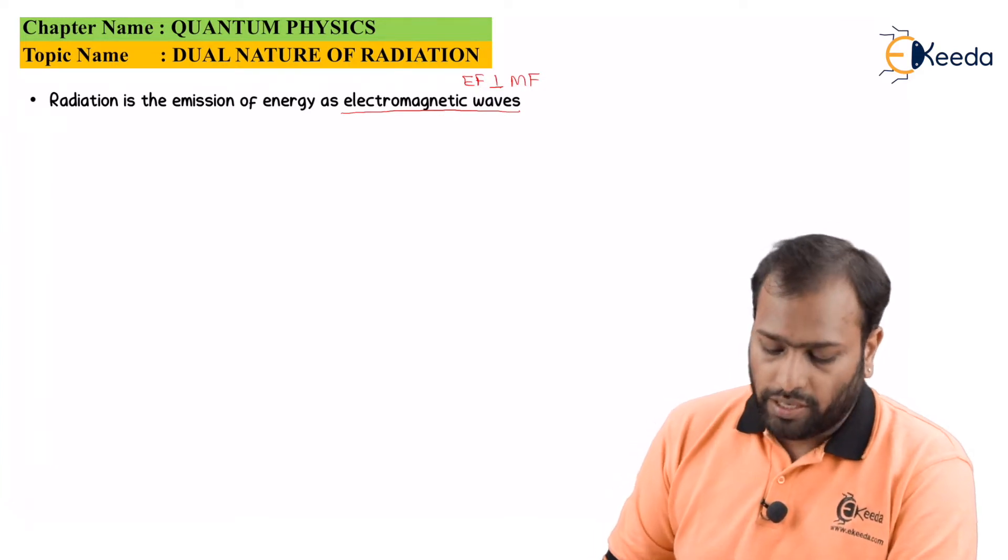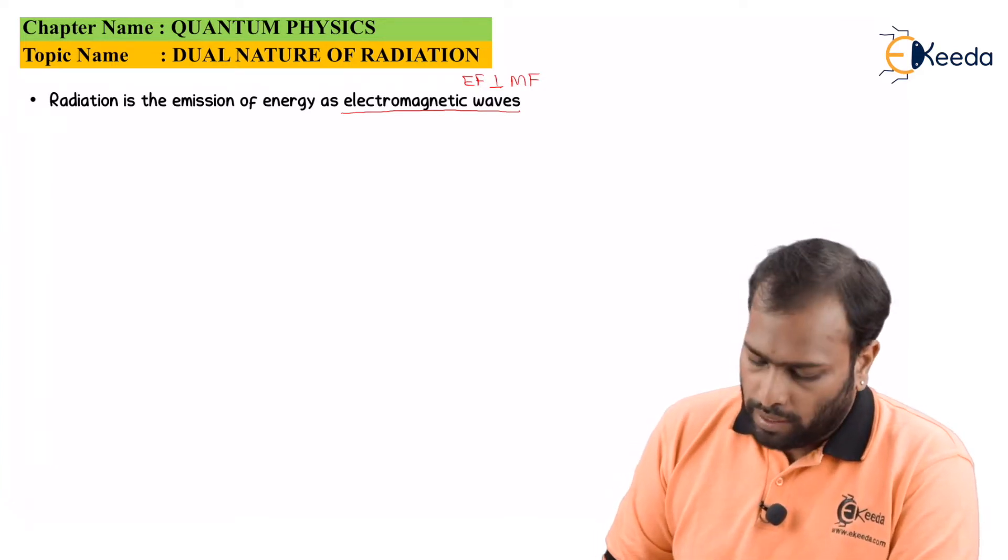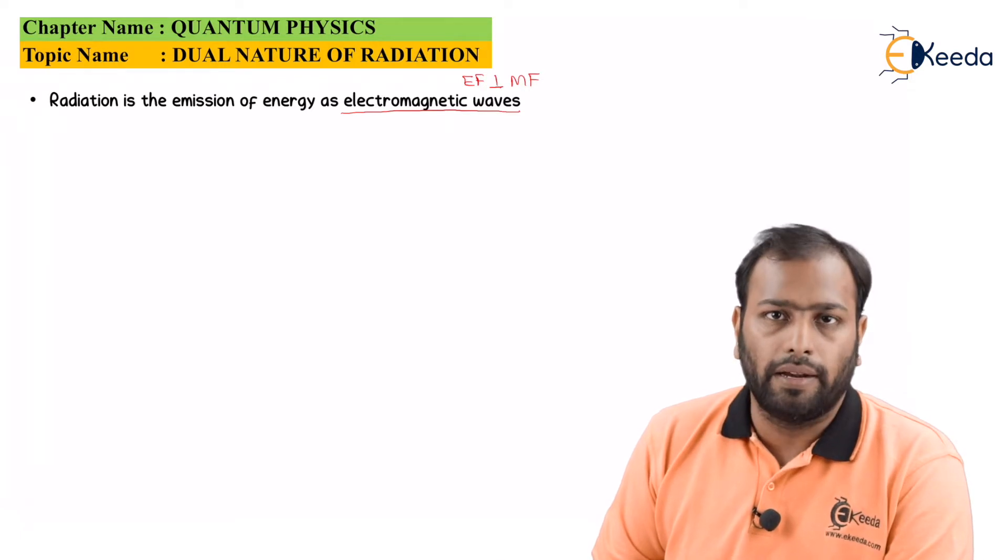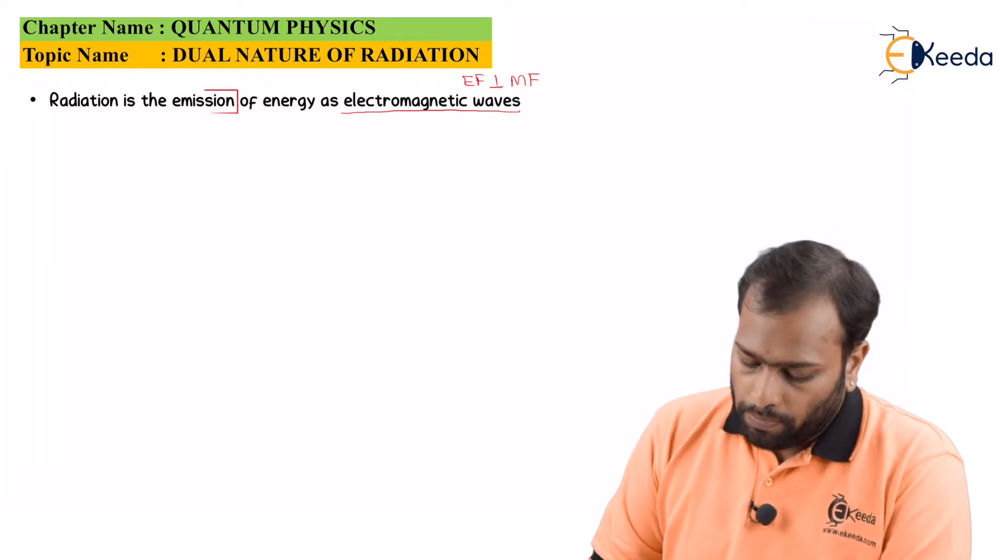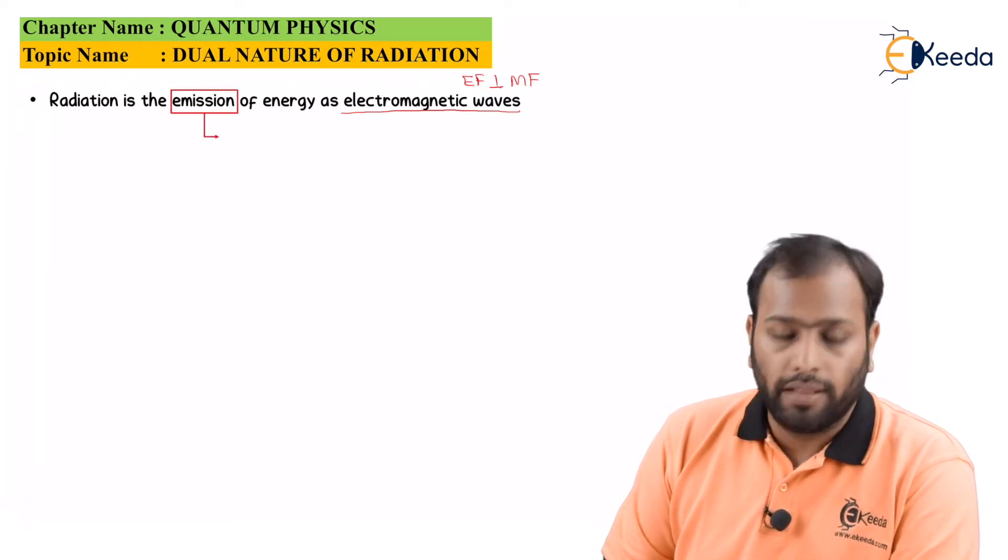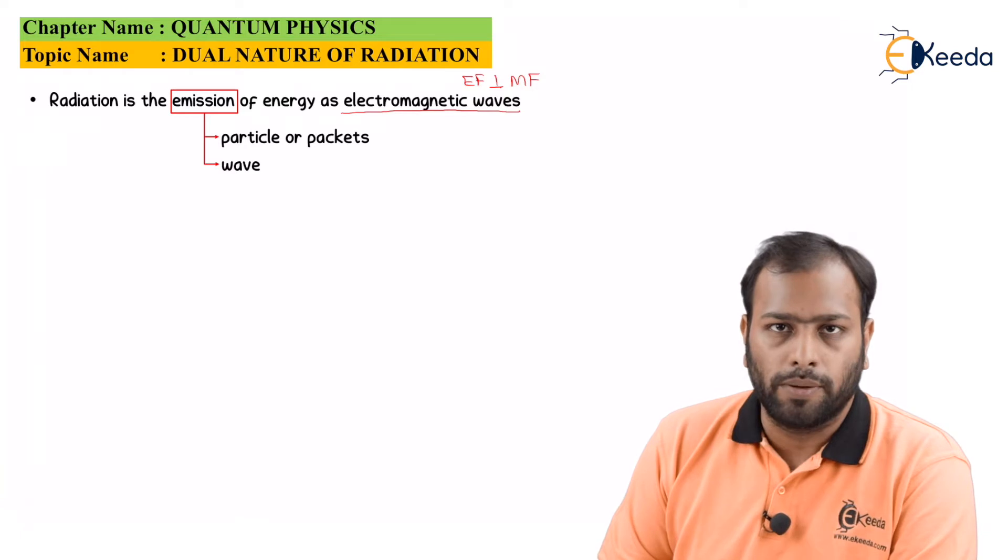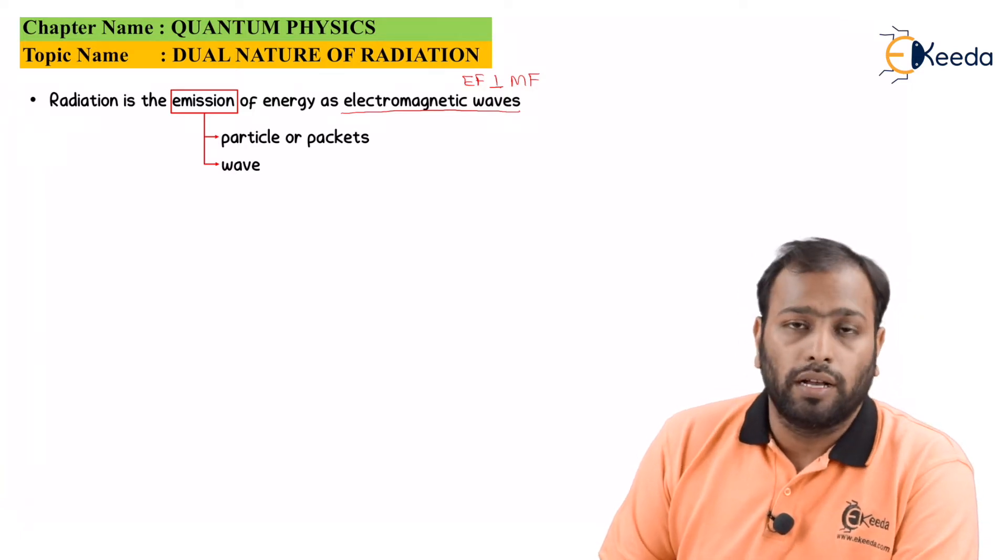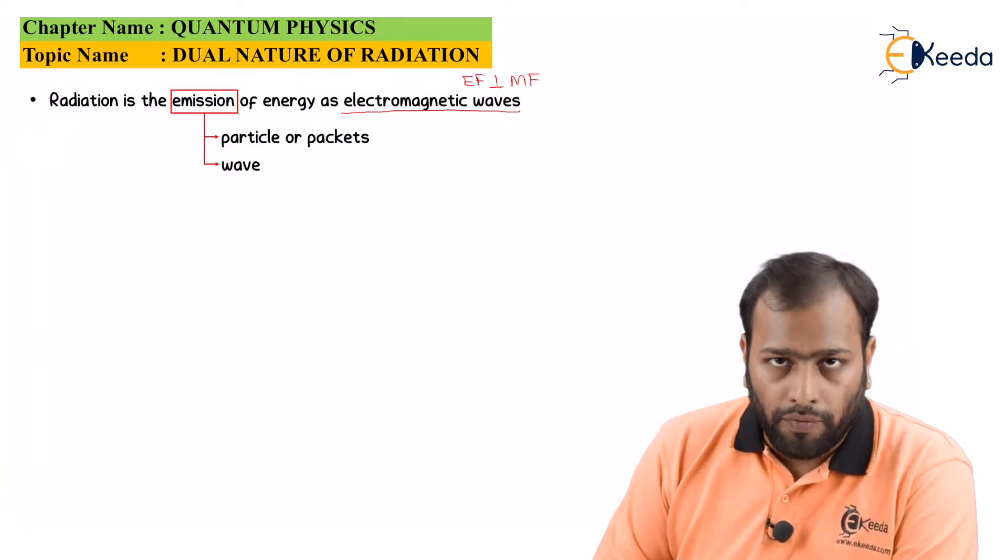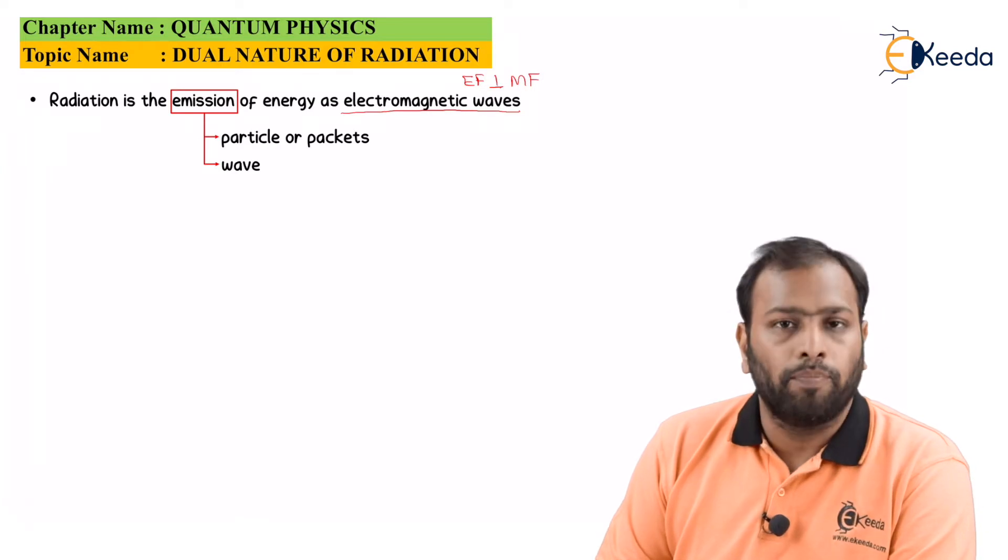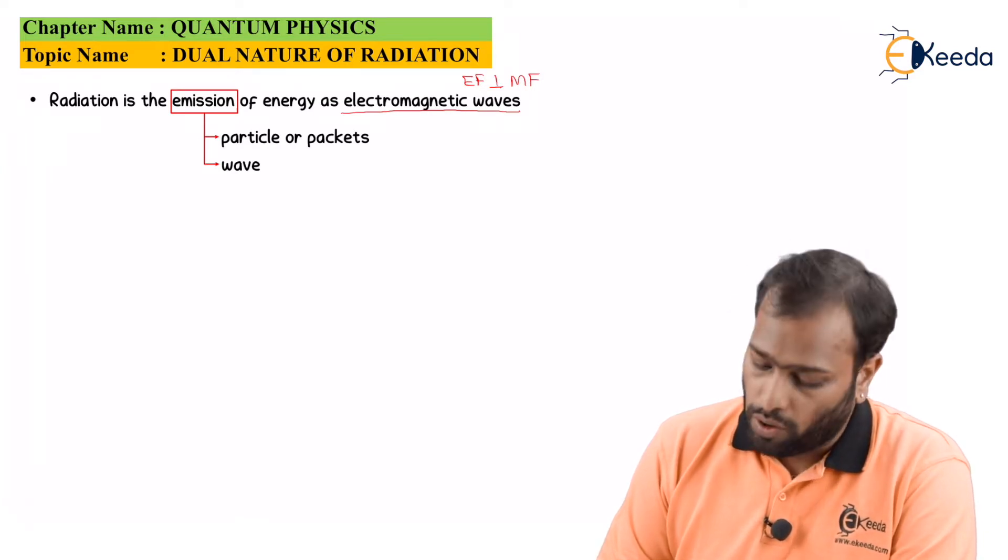Now, so this radiation is the emission of energy. Now, the whole story is hidden behind the word emission. Well, this emission could be done in the form of particles or packets and it could also be done in the form of waves. Now, this is what the crux of the story is: wave or particle. Well, this is called as the dual nature of radiation.